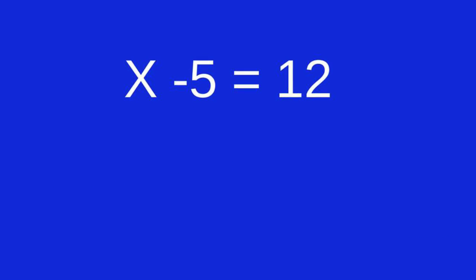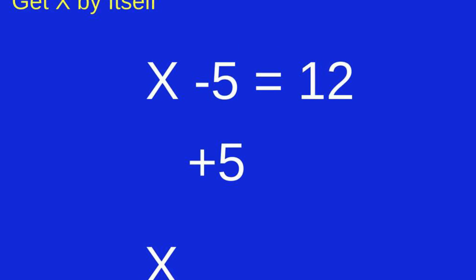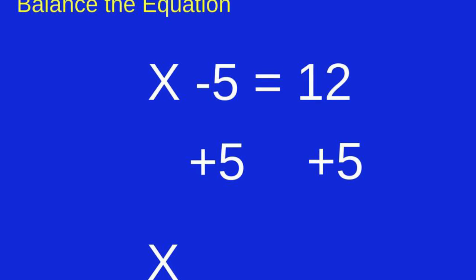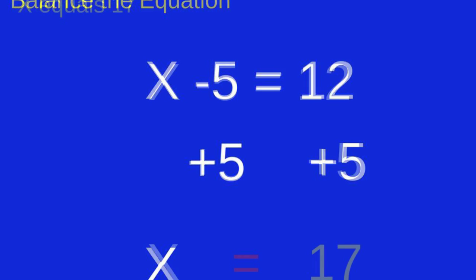Let's try another. X minus 5 equals 12. We need to get the x by itself, so we add 5 to that side of the equation. In order to balance the equation, we add 5 to 12 on the other side.